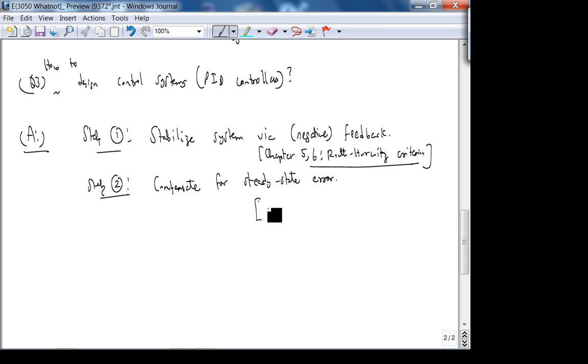In chapter 7, you compensate for steady-state errors using the concept of system type. Type 1, type 2. Type basically refers to the number of integrators. If you have one integrator, it's called type 1. If you have two integrators, it's called type 2. But when you introduce integrators to compensate for steady-state error, you will affect the transient response because you are introducing another pole.